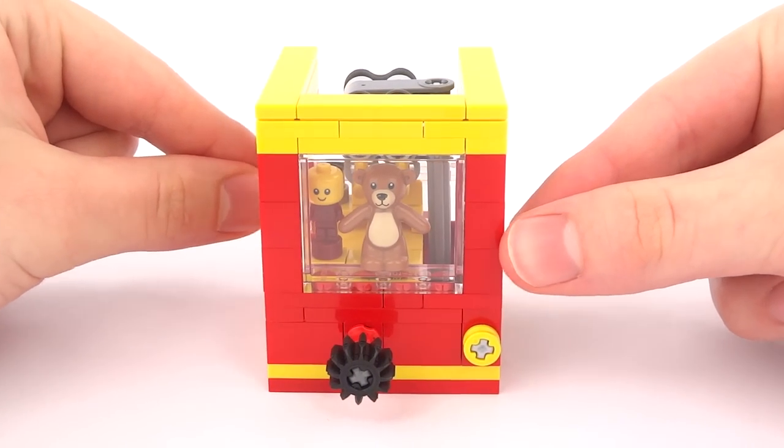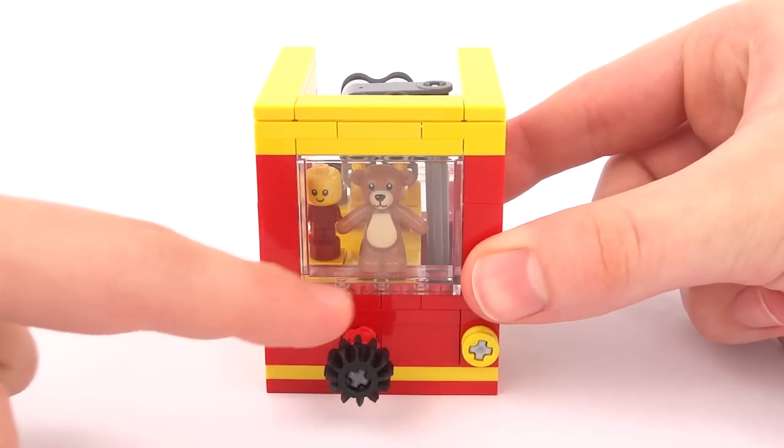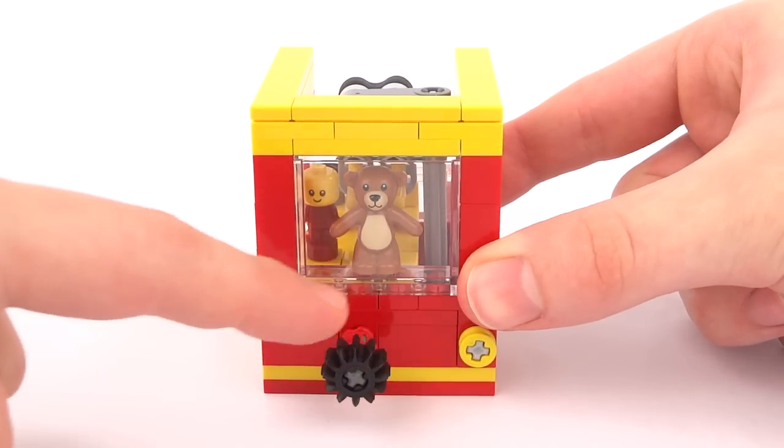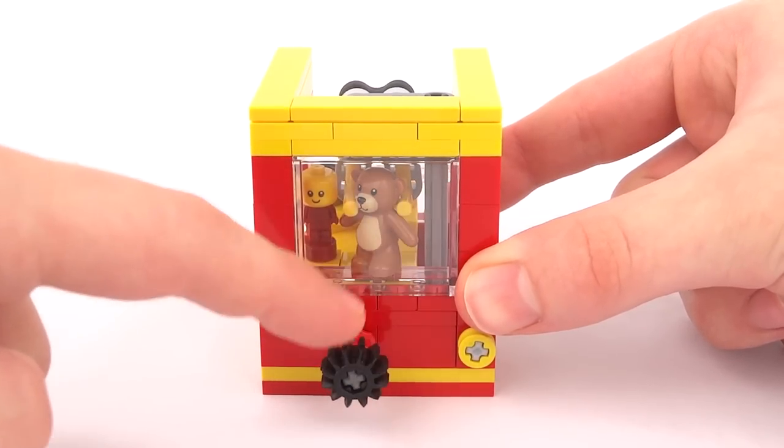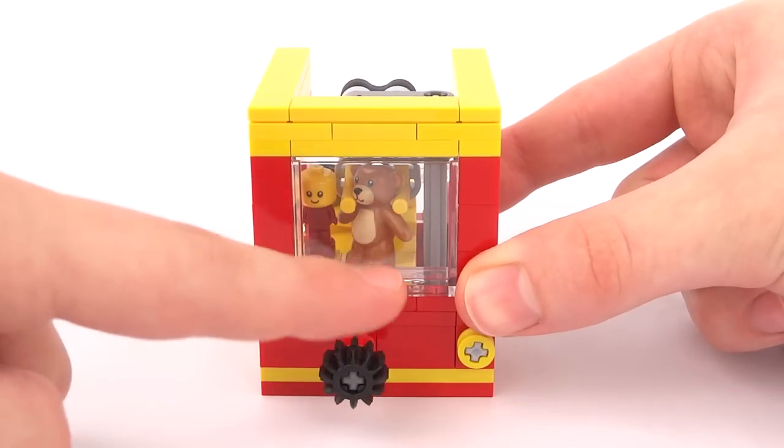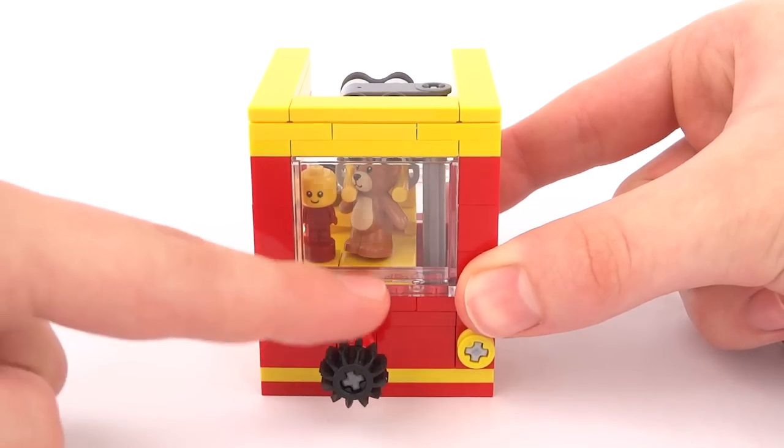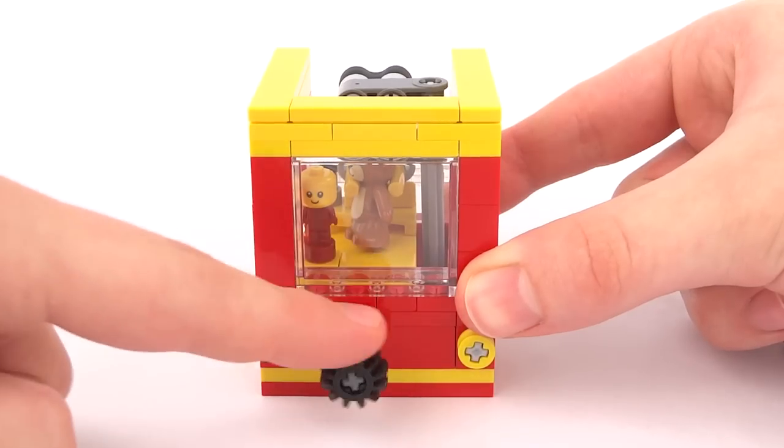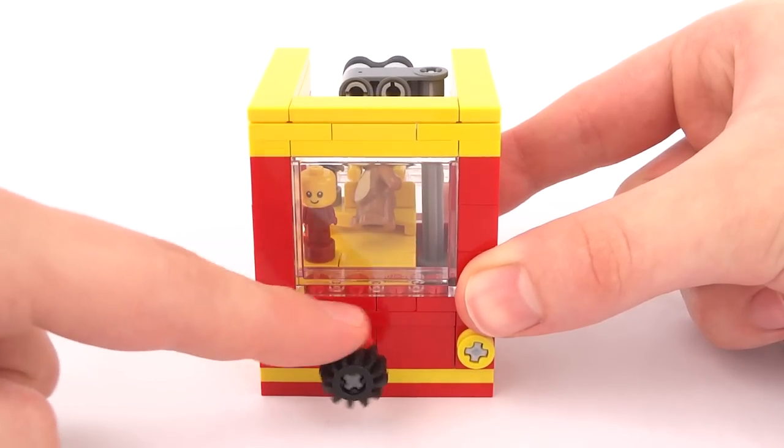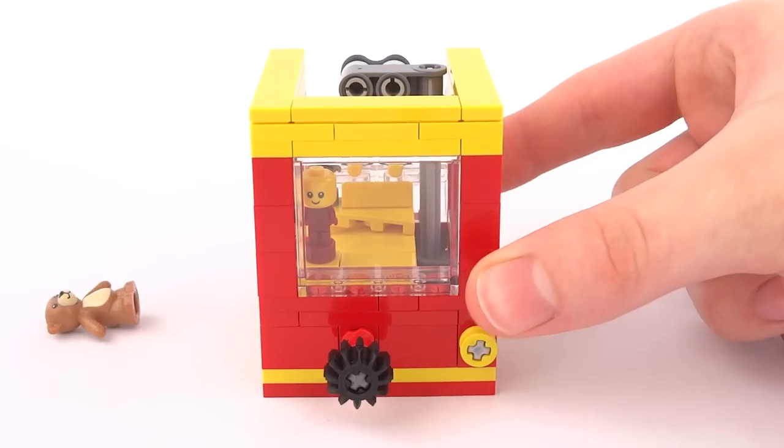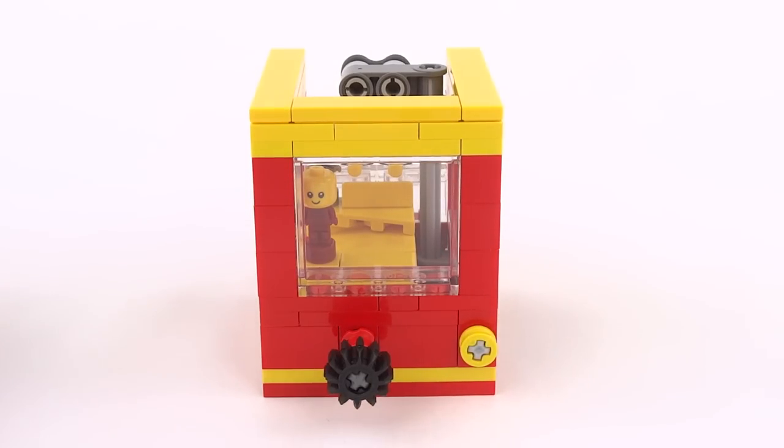Next is the claw grabber machine where you can have a go at winning one of the prizes inside. Once you've grabbed something, you can move the claw grabber over to the drop off point where your prize will be deposited. This time it looks like we've won a toy teddy bear.